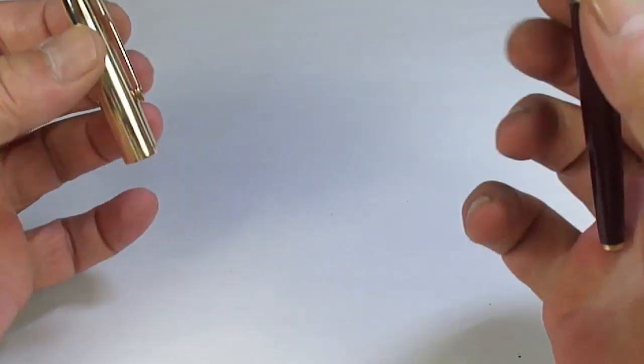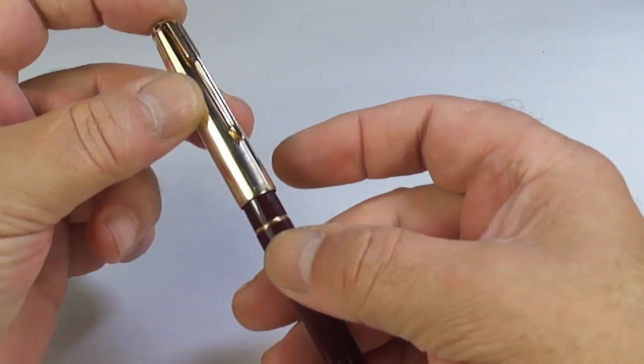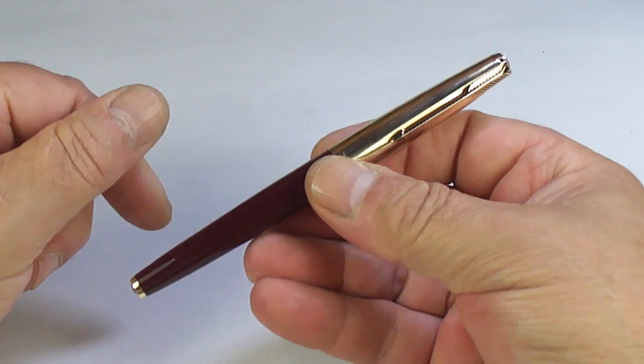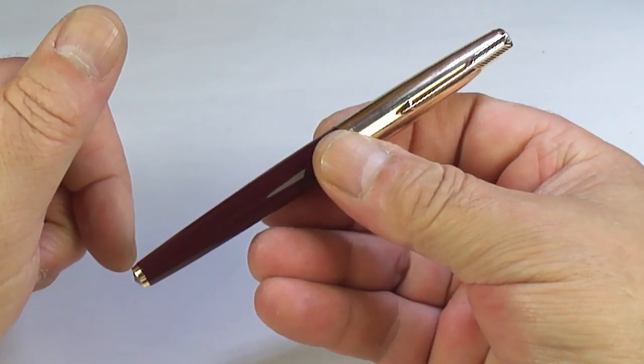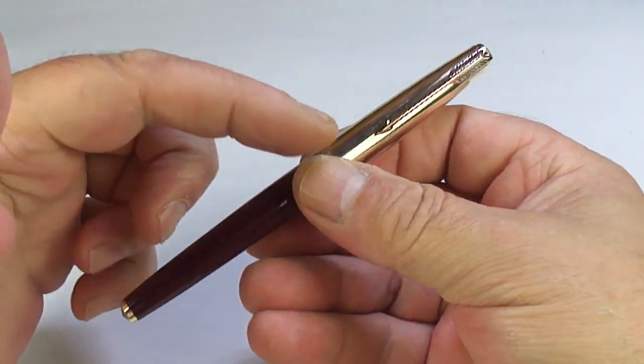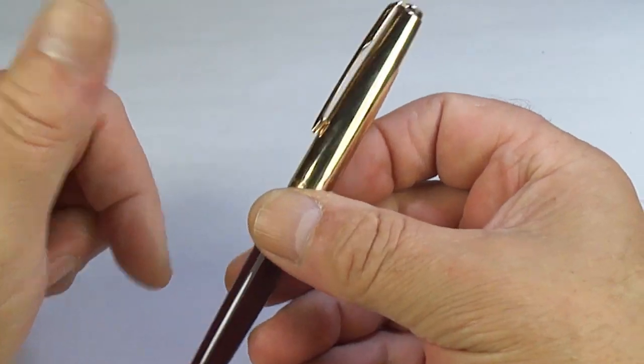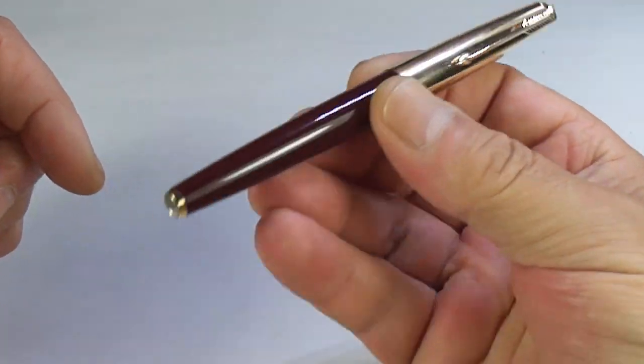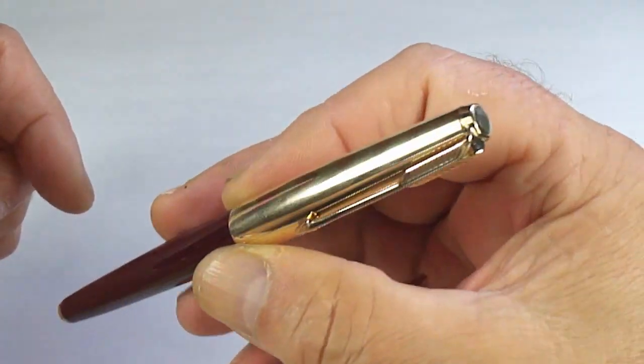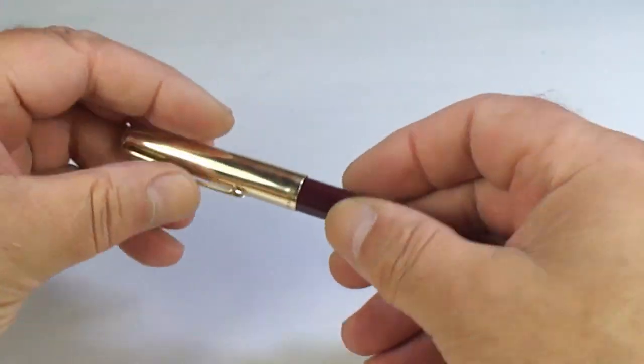What we'll do, we'll clean the pen after the video before we try and find a new home for it. So there we have it, Parker 61 cartridge converter, this is the Heirloom, which is the rose gold and yellow patterned rainbow patterned cap, in burgundy, fully restored, ready for a new customer.